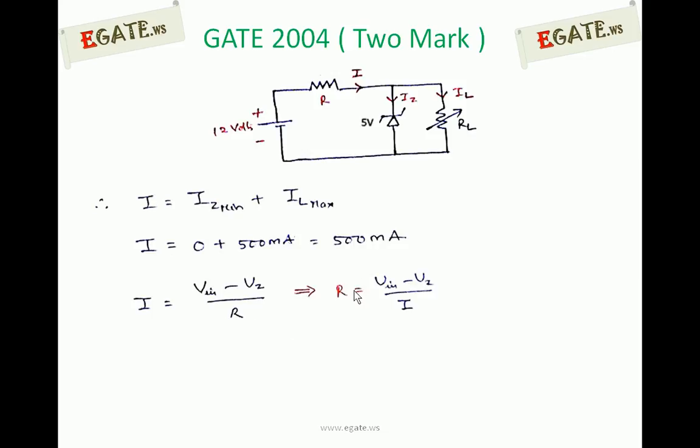Since I equals V input minus VZ divided by R, R can be written as V input minus VZ by I. The value of R is, V input is 12 volts, VZ is 5 volts, 12 minus 5 divided by 500 mA. If you are going with 12 minus 5 is 7, 7 by 0.5 amperes, we can write it as 14 ohms. The required answer for the resistance value is 14 ohms.